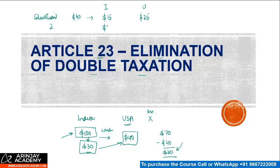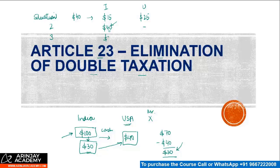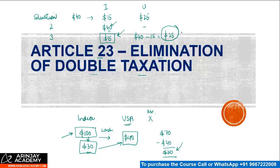Situation two: India and the US agree the entire tax — say $30, reflecting India's corporate tax rate — will be levied only in India, and the US will not tax the income. Situation three: India levies $15, the US imposes $40 but credits the $15 paid in India, so the net amount due to the US is $25 — resulting in a total tax outflow of $40.